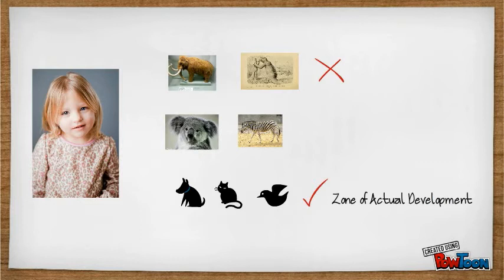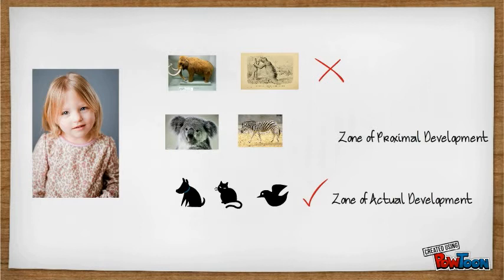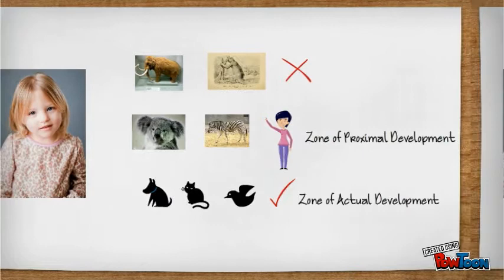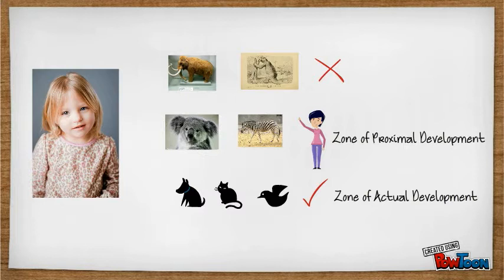The animals that Annie can identify on her own is the Zone of Actual Development. At this level, Annie has already developed her understanding and knowledge of these animals. The Zone of Proximal Development is the area just out of reach of Annie's current knowledge level, but with the guidance of her teacher, she can begin to identify the animals until the teacher's guidance is no longer needed. Identifying Ice Age animals that are extinct are beyond the reach of Annie's level of development, where learning is not yet possible. Trying to learn at this level can be discouraging and frustrating to the child.